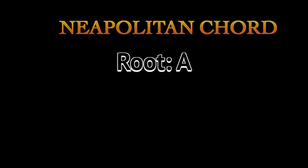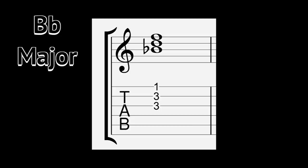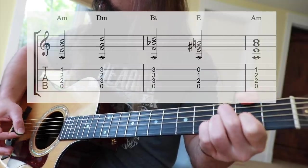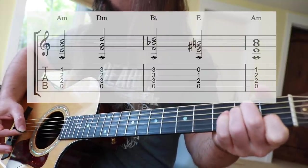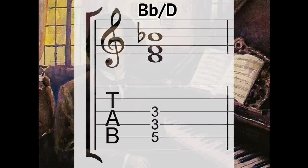The Neapolitan is every classical composer's favorite. Play a Neapolitan chord by going up a half step from the root and playing a major chord. For example, in the key of A minor, the Neapolitan chord is B flat. Usually it's played in first inversion in a minor key, but it's fine to use any other inversions as well.